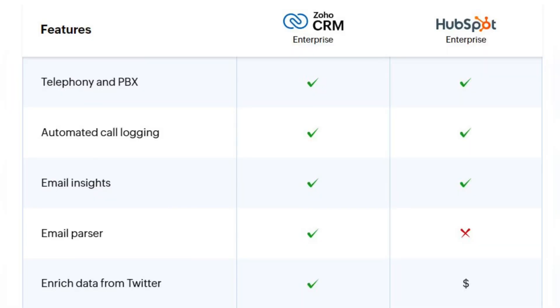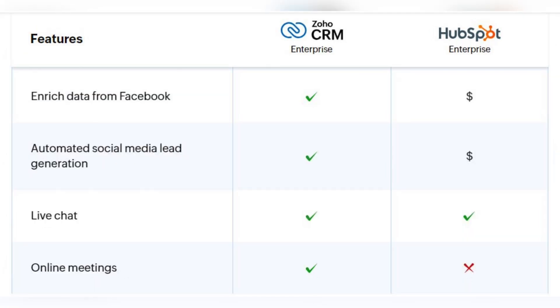Let's move on to another feature comparison: omnichannel support, because providing support and gathering leads from different channels is very important for any type of business. Both CRM systems provide telephony, automated call logging, email insights and live chat. HubSpot lacks the features of online meetings and email parser, and there are some additional features that are paid add-ons in HubSpot, such as enriching data from Twitter and Facebook, and automated social media lead generation.